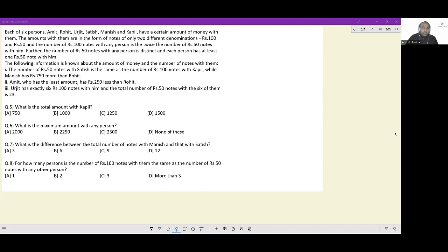Let's look at this set. Each of six persons Amit, Rohit, Urjit, Satish, Manish and Kapil have a certain amount of money with them. The amounts with them are in the form of notes of only two different denominations rupees 100 and rupees 50, and the number of rupees 100 notes with any person is twice the number of rupees 50 notes with him. Further, the number of rupees 50 notes with any person is distinct and each person has at least one rupees 50 note with him.